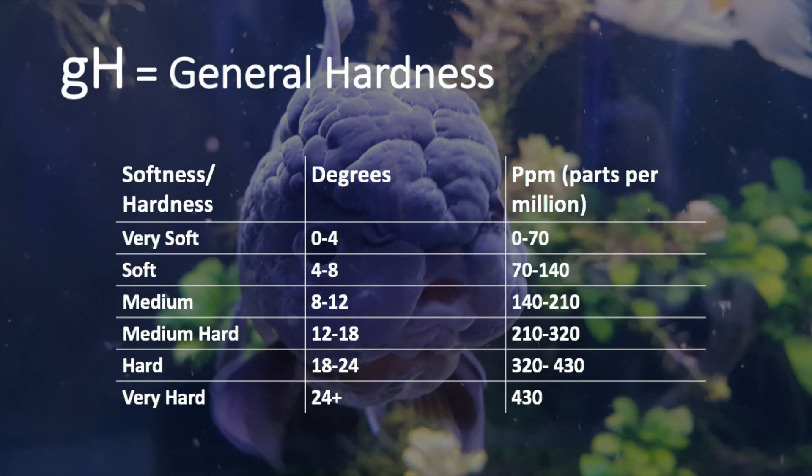Here is a chart of what different amounts of GH will be considered as, and you can easily test your aquarium's GH by using a GH test kit. Like pH, there are things which adjust the levels of GH, and I will explain how after our last parameter.